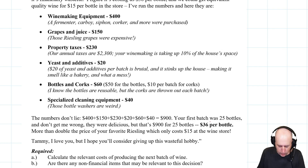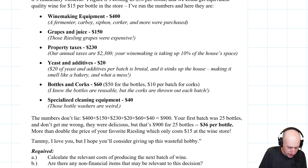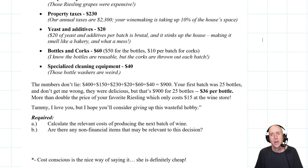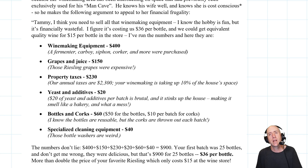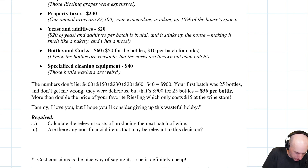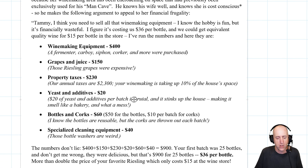Your first batch was 25 bottles, and don't get me wrong, they were delicious. But that's $900 for 25 bottles of wine — $36 a bottle. That's more than double the price of your favorite Riesling, which only costs $15 at the wine store. "Tammy, I love you, but I hope you'll consider giving up this wasteful hobby." So he's making a financial argument. The bottom line is he probably just wants his man cave back. But let's break down the financial argument and determine whether each cost is relevant. The decision is: calculate the relevant cost of producing the next batch of wine.